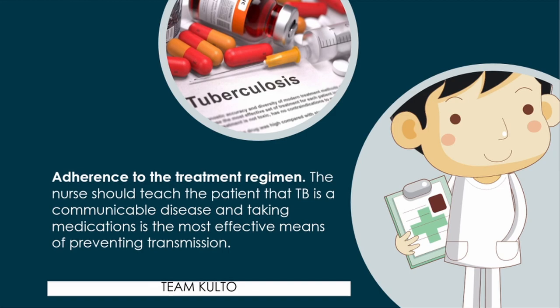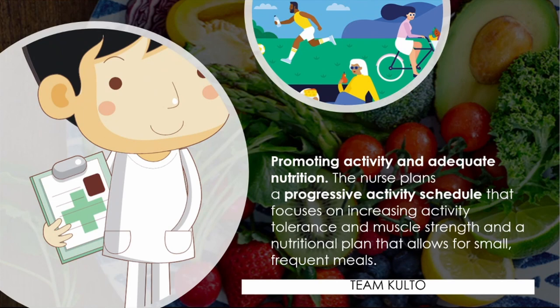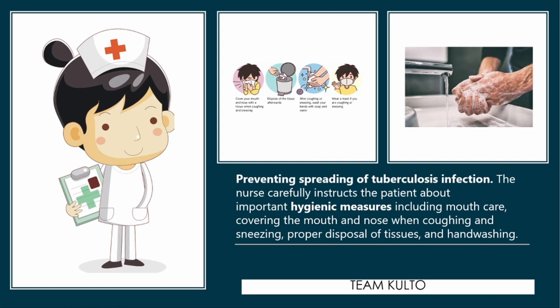Promote activity and adequate nutrition — the nurse plans a progressive activity schedule that focuses on increasing activity tolerance and muscle strength, and a nutritional plan that allows for small frequent meals. Additionally, instruct the patient about preventing the spread of tuberculosis infection through important hygienic measures: mouth care, covering the mouth and nose when coughing and sneezing, proper disposal of tissues, and hand washing — cough etiquette and hand washing are the most recommended practices to break the chain of infection.